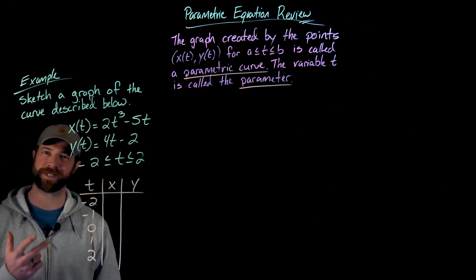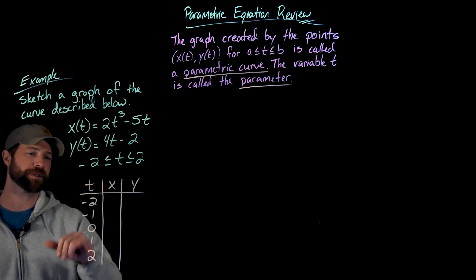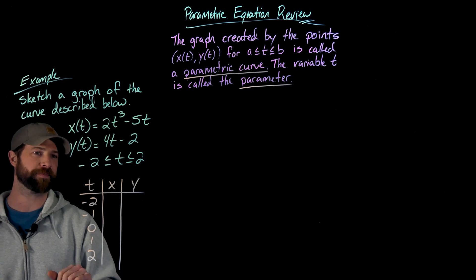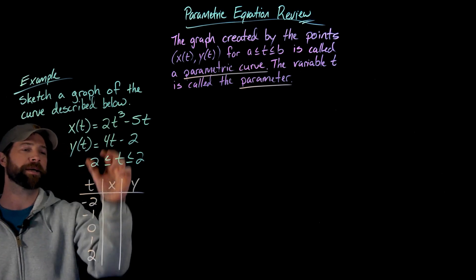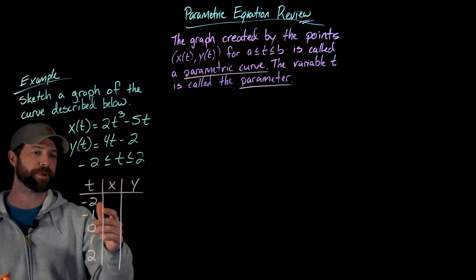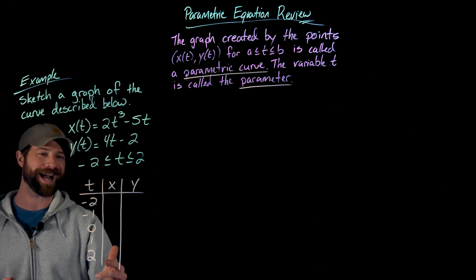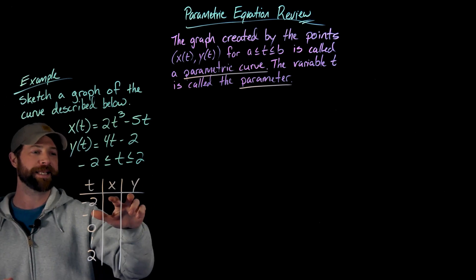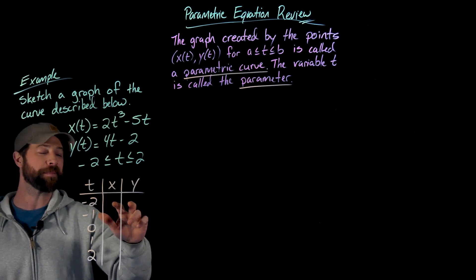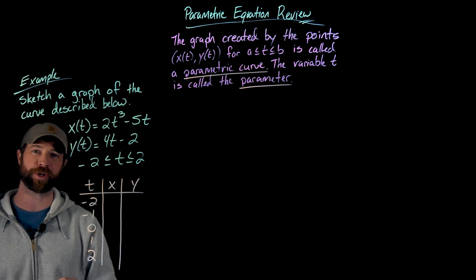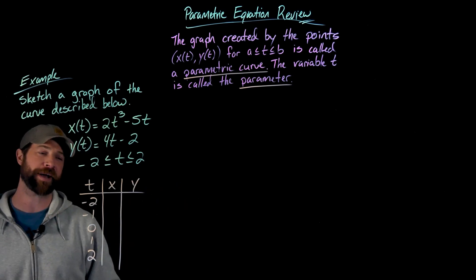So in order to find my ordered pairs to plot on a graph, all I'm going to do is select these integer values from my parameter and plug them into each of these equations. What I'm going to do first is get values for x, then values for y. These pairs of x and y become my ordered pair points that I'll plot on the graph related to their parameter value.